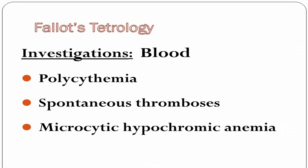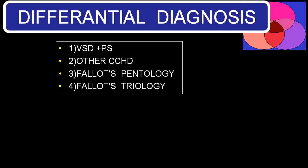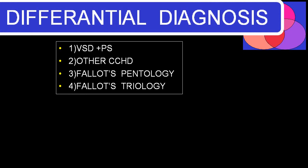Blood examination shows polycythemia; microcytic hypochromic anemia may also be present. Differential diagnoses include VSD with pure pulmonary stenosis, other cyanotic congenital heart diseases, Fallot's pentology, and Fallot's triology — all differentiable by echocardiography and angiography.